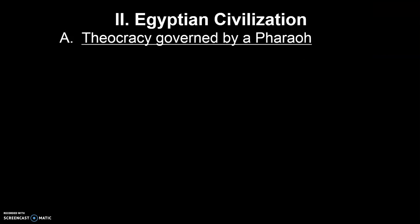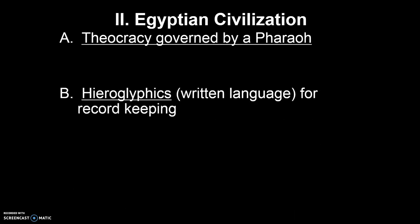Egyptian civilization was a theocracy governed by a pharaoh. The pharaoh was basically a living god and was treated as such until about the Middle Kingdom. Then the divinity of the pharaoh came into question, and the pharaoh actually had to work for obedience — it was no longer automatic the way it was in the Old Kingdom.